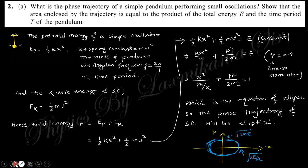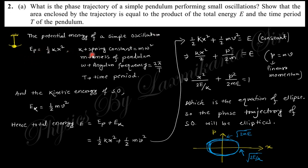Going to the answer of Question 2a: what is the phase trajectory of a simple pendulum forming small oscillations, such that the area enclosed by the trajectory equals the product of total energy E and time period T? The potential energy of a simple oscillator is E_p = (1/2)kx², where k is the spring constant, k = mω², m is the mass of the pendulum, and ω = 2π/T is the angular frequency.